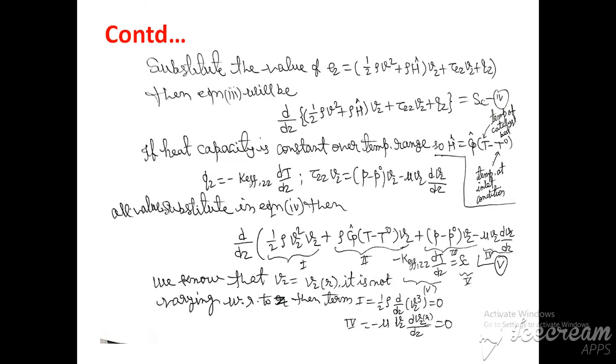d by dz bracket one-half rho v square plus rho h cap vz plus tau zz vz plus qz equals Sc, where rho is the density of fluid, v is the velocity of fluid, h is the enthalpy, vz is the velocity of the fluid, and tau zz is a normal stress.